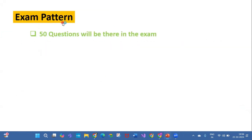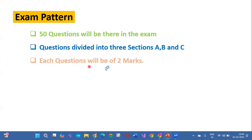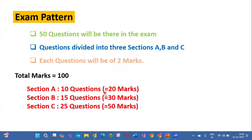Now let me discuss the exam pattern. There will be 50 questions divided into 3 sections: Section A, Section B, and Section C. Each question is worth 2 marks, making the total 100 marks. Section A consists of 10 questions worth 20 marks, Section B consists of 15 questions worth 30 marks, and Section C consists of 25 questions worth 50 marks.